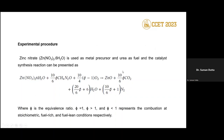This is the reaction generally used for the synthesis of ZnO catalyst by the SCS method. We are using zinc nitrate as the precursor and urea as fuel. Since we can change the amount of fuel, we vary the amount of urea to change the phi (φ) parameter. When using stoichiometric amount, phi equals 1; if higher, phi is greater than 1; and if lower, phi is less than 1.